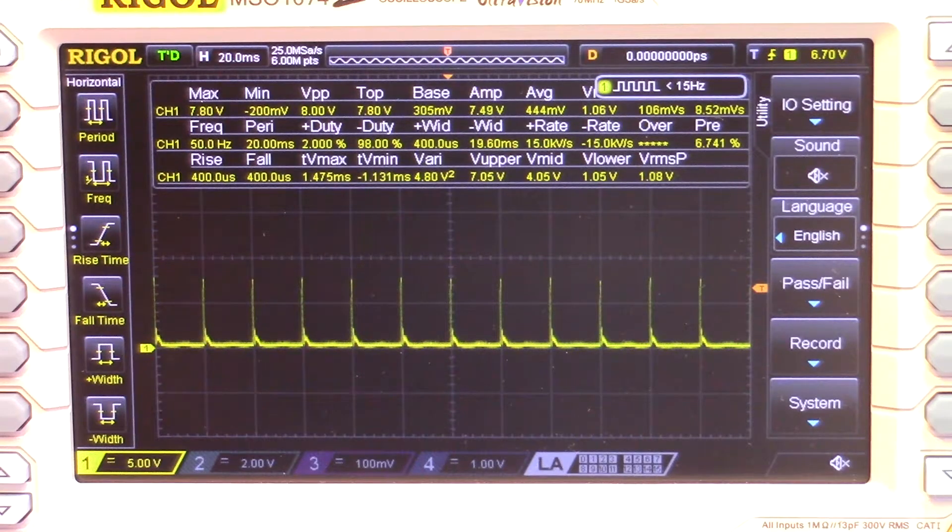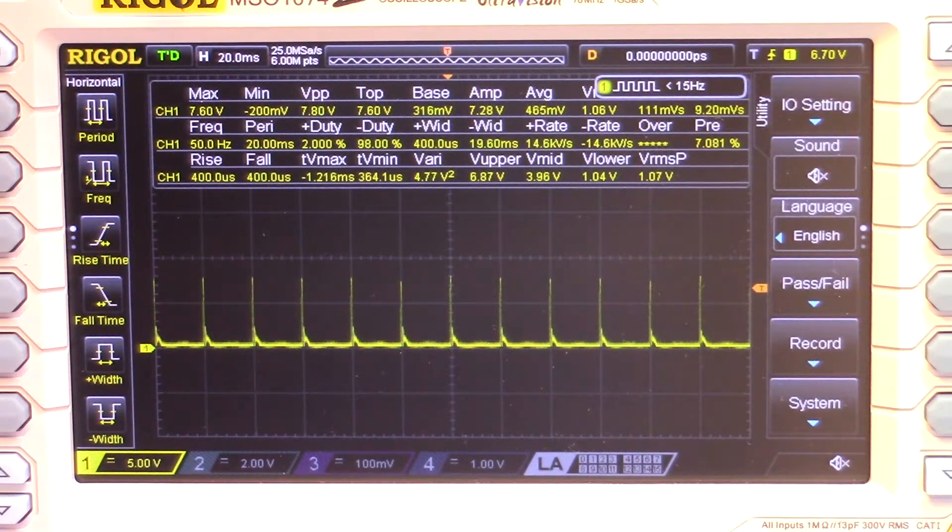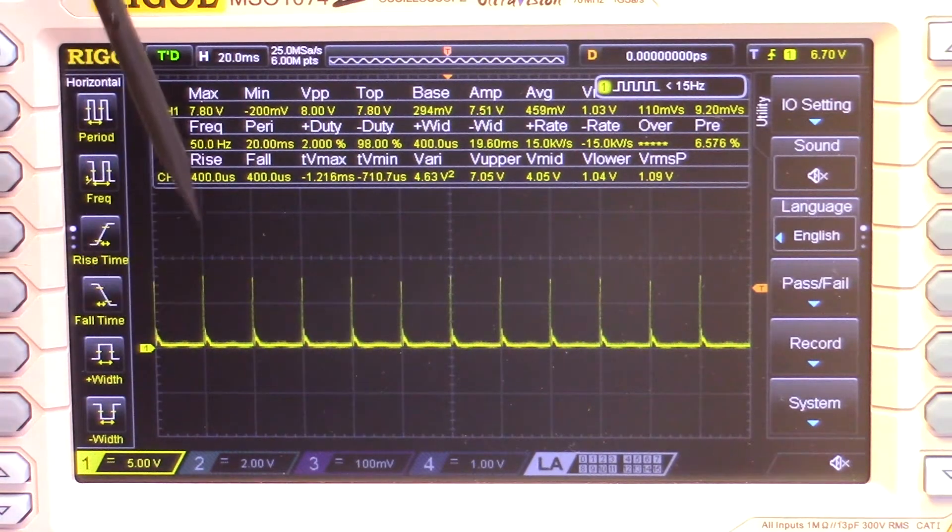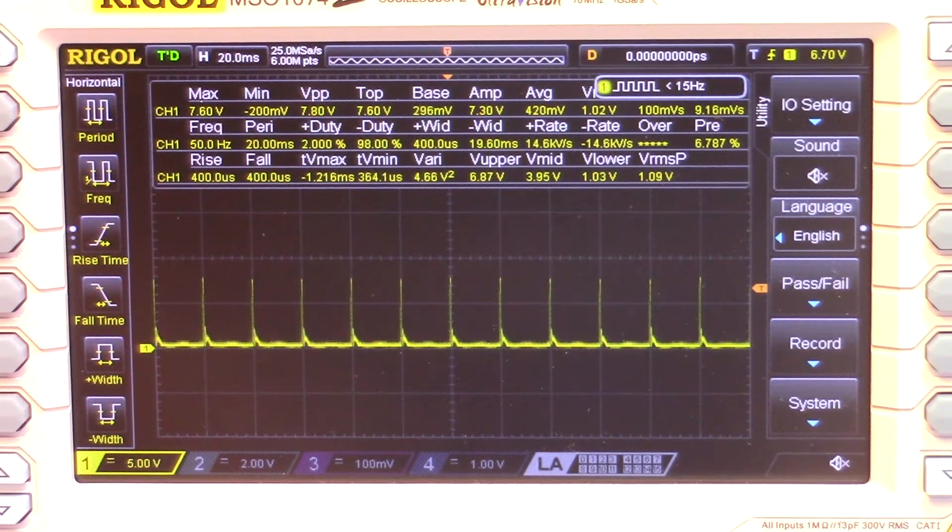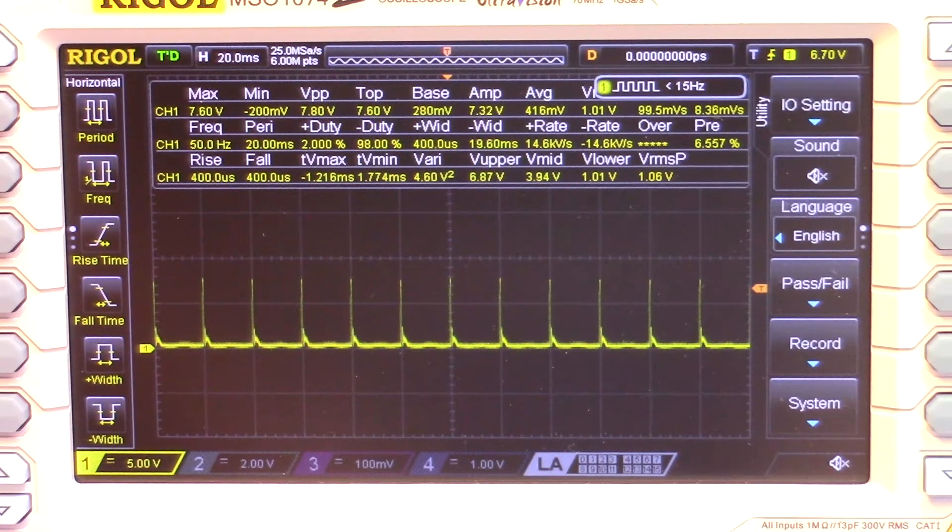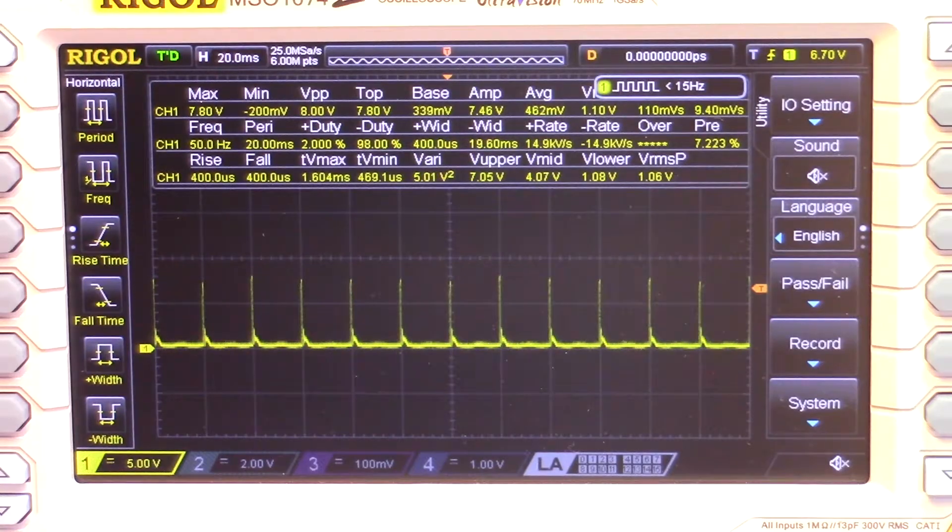You can see on the oscilloscope, the time base is set to 20 milliseconds, so it's drawing pulses of current at 50 Hertz. We'll have a look inside the AC to DC converter in a moment to see what's explaining why the power factor is so poor.